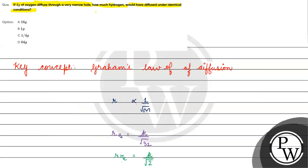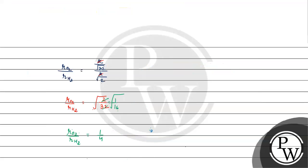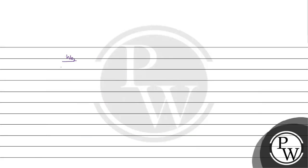Now, if we take the ratio of how much has diffused: rate of oxygen diffused equals moles of oxygen diffused by time, over moles of hydrogen diffused by time, equals 1 upon 4. Time cancels out. So moles of oxygen diffused by moles of hydrogen diffused equals 1 upon 4. Expanding: mass of oxygen diffused divided by molar mass of oxygen, over mass of hydrogen diffused divided by molecular weight of hydrogen, equals 1 upon 4.